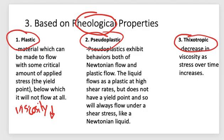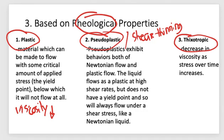For pseudoplastic gels, they exhibit behaviors of both Newtonian flow and plastic flow. The liquid flows as a plastic at high shear rates but does not have a yield point, so it will always flow under shear stress like a Newtonian liquid. This behavior is also called shear thinning. The key point for pseudoplastics is: the more stress is applied, the more freely it flows.